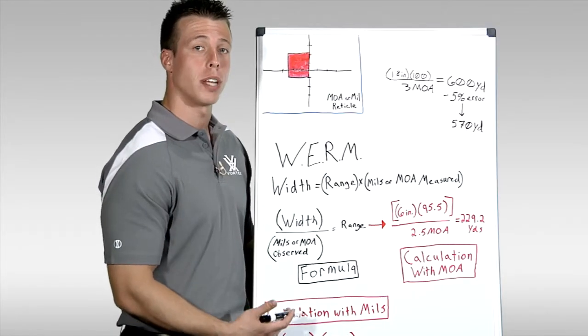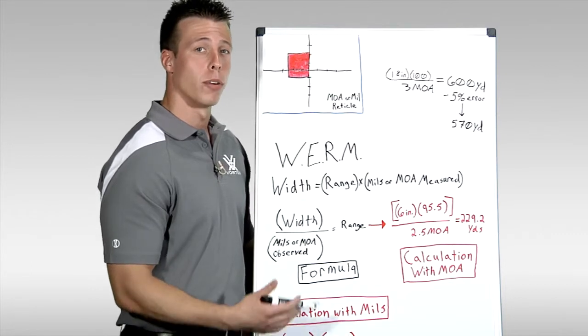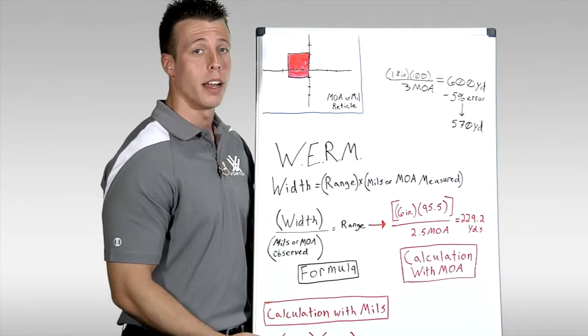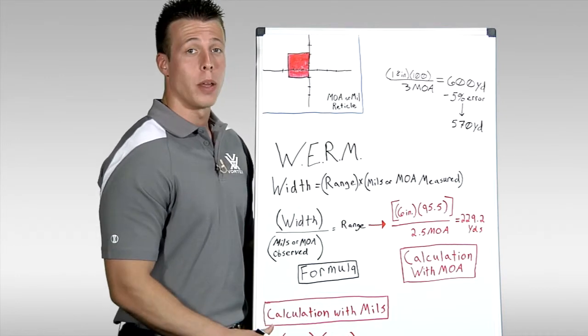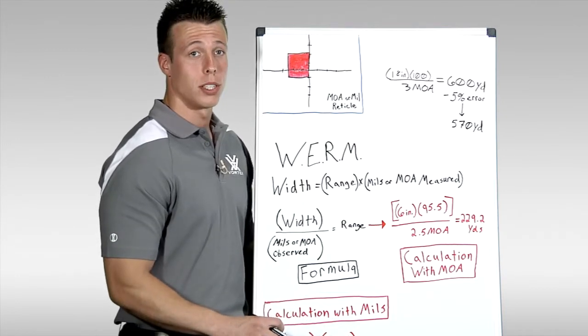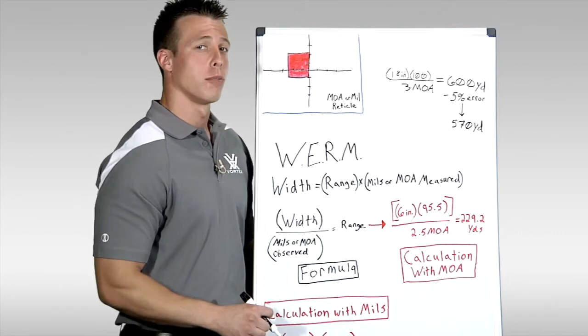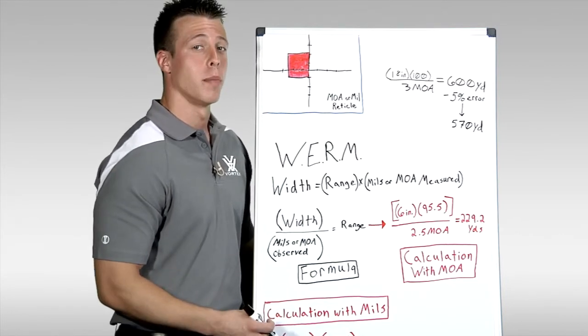At Vortex Optics, we produce and promote riflescopes that have both minute of angle and milliradian reticles for estimating distance of the target. However, we don't promote any one over the other one. There is no such thing as better or worse than the other. We encourage you to find out for yourself which one will work best for you and your intended purposes.